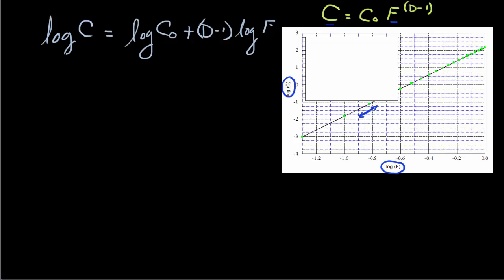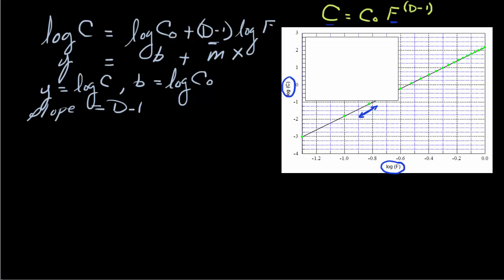Now let's write down the equation of a straight line. It's in a little bit different form. We have the dependent variable is equal to, in this case, this is the intercept, so this is the B plus the slope times X. So our Y is equal to the log of C, the intercept is equal to the log of C zero, the slope is equal to D minus one, and our independent variable X is equal to the logarithm of the liquid fraction.